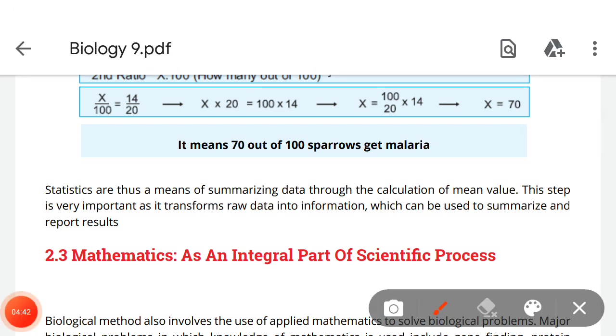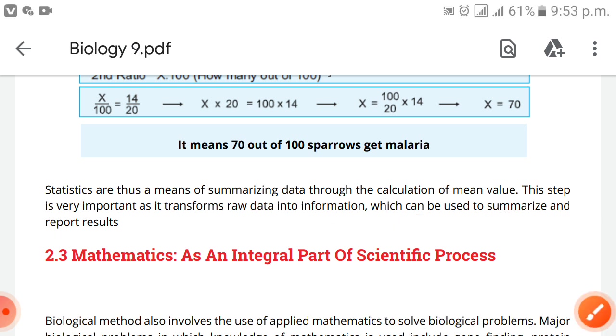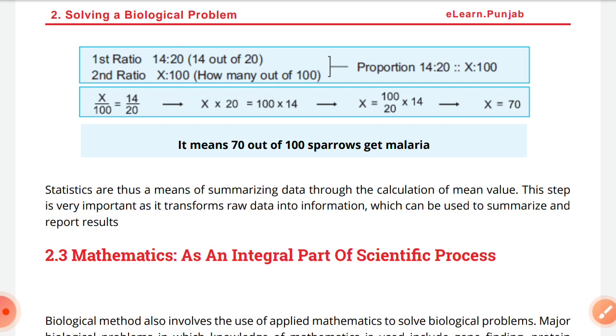Statistics are the means of summarizing data through the calculations of mean value. This step is very important as it transforms raw data into information which can be used to summarize and report results. On this basis we study the results, summarize the results, and present what actual findings are of our experiments.